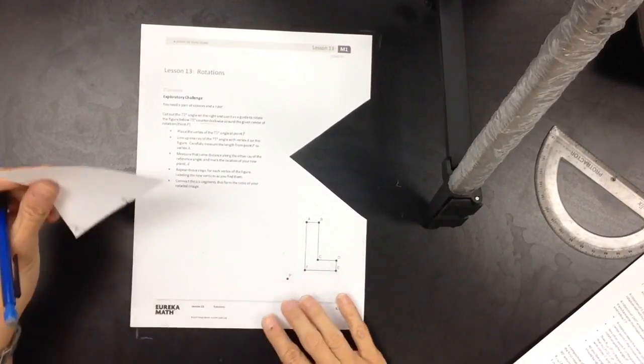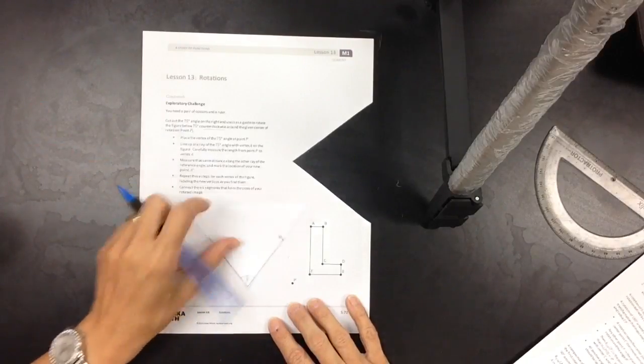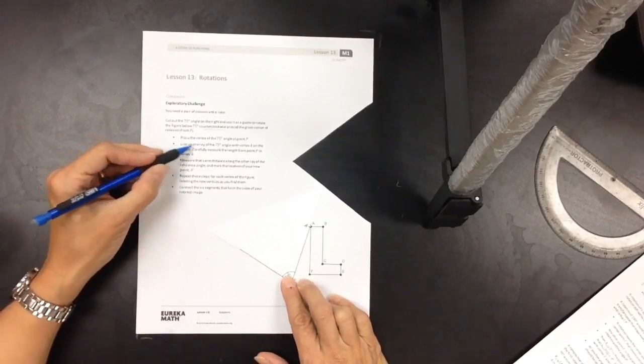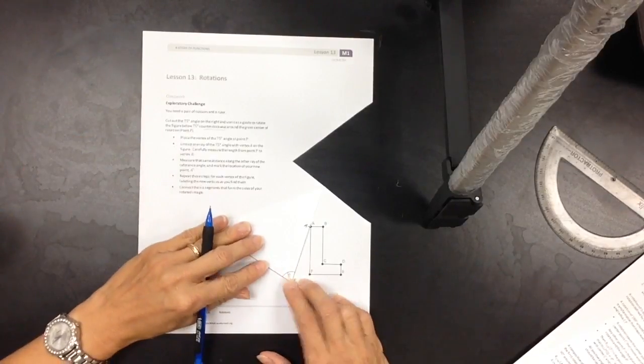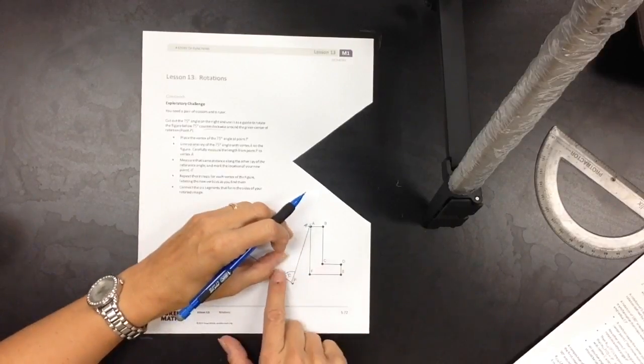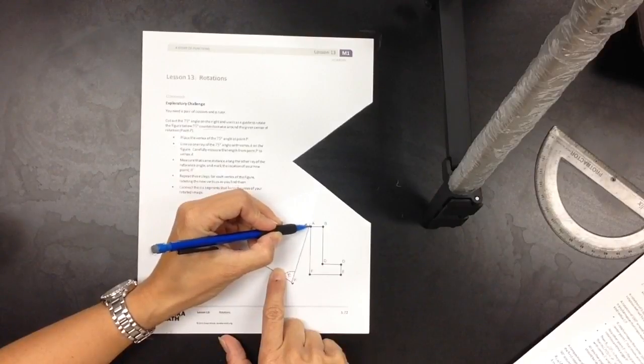So first, let's follow the instructions. Place the vertex of the 75-degree angle at point P. So this is the vertex. I'm placing it at point P. And line up one ray of the 75-degree angle with vertex A on the figure. So there's my ray. I just marked it. This is point A.